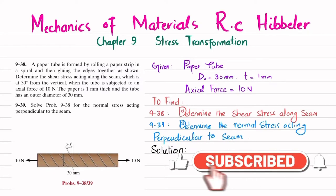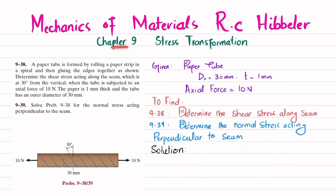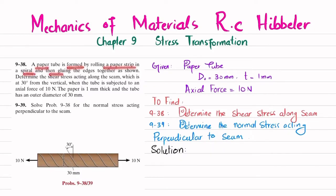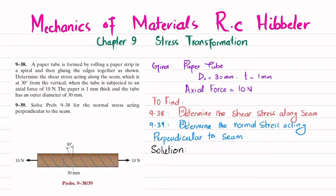Welcome back. In this video we are going to solve problems 9-38 and 9-39, taken from chapter 9 on stress transformation from the book Mechanics of Materials by R.C. Hibbeler. The statement is: a paper tube is formed by rolling a paper strip in a spiral and then gluing the edges together. Determine the shear stress acting along the seam, which is at 30 degrees from the vertical, when the tube is subjected to an axial force of 10 Newton. The paper is 1 millimeter thick, the tube has an outer diameter of 30 millimeters, and in problem 9-39 we solve for the normal stress acting perpendicular to the seam.